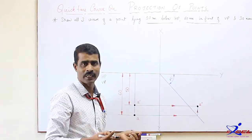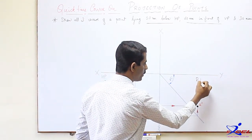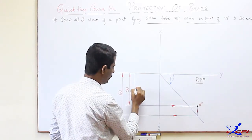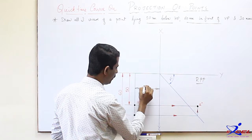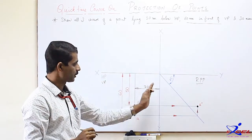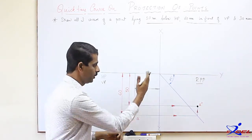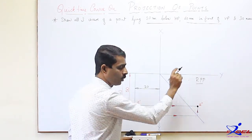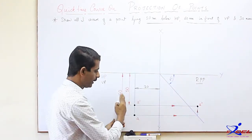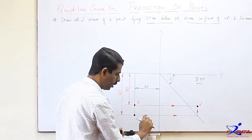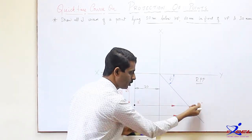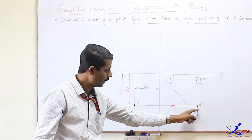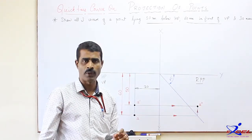To obtain the profile or side view, the distance from RPP is 30 mm. We maintain this distance as 30 from the X1Y1 line — though it only affects the position of the X1Y1 line, not the view itself. The top view is rotated by drawing a 45-degree line adjacent to it, projected horizontally and vertically. The front view is projected horizontally. Where these two lines intersect, we get the profile or side view. This is for the fourth quadrant.